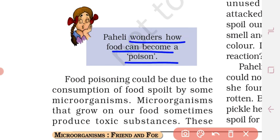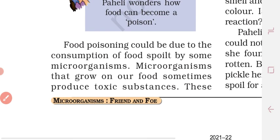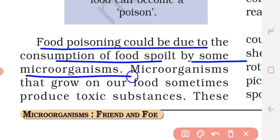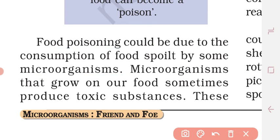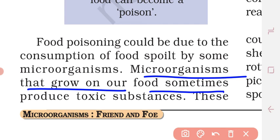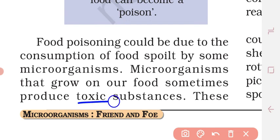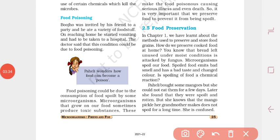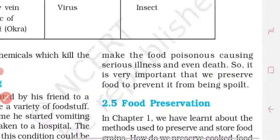We wonder how food can become a poison. Food poisoning could be due to the consumption of food spoiled by some microorganisms. Microorganisms that grow on our food sometimes produce toxic substances, which can cause serious illness and even death.